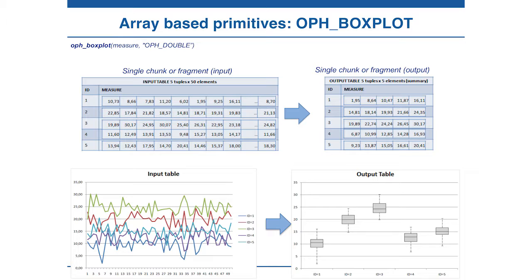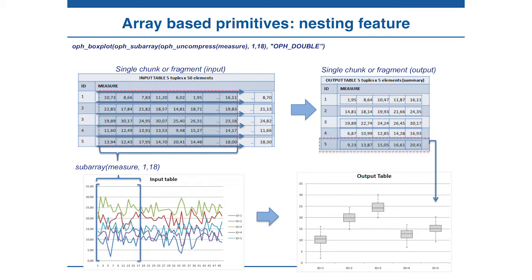Similarly, in a tabular representation, this is the input table and this is the output. As I said before, primitives can be nested together in order to compose much more complex functionality. In this case, we want to extract the box plot of a subset of this input data, where the input data are compressed. We can use a single statement with all the functionalities nested together: OphUncompress to uncompress the data, Subarray to select only a portion of the input data, and then on this input we apply the box plot.